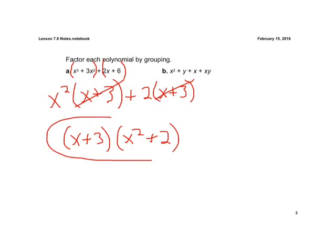This is our factored form here, and that's our final answer. We can't factor x squared plus two any further, so we're done.